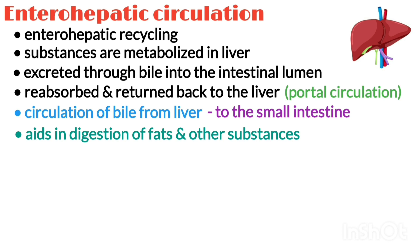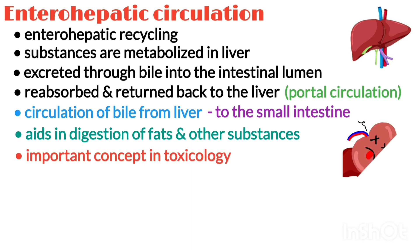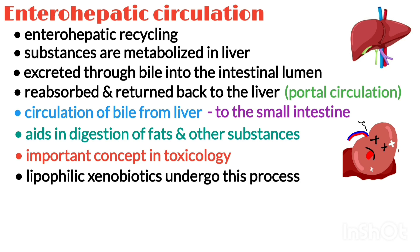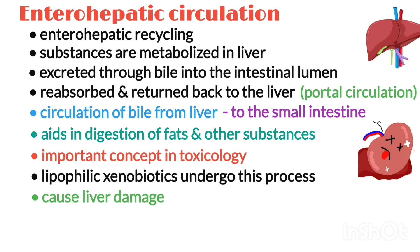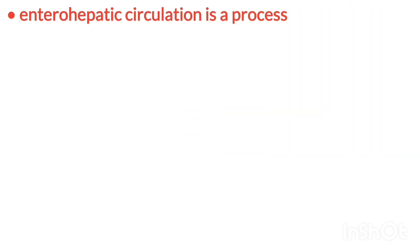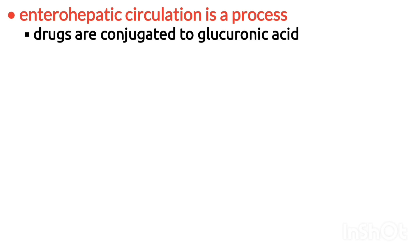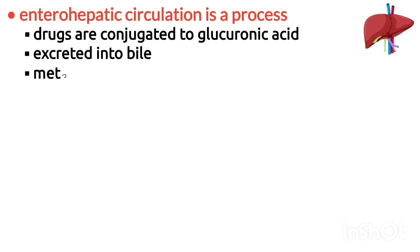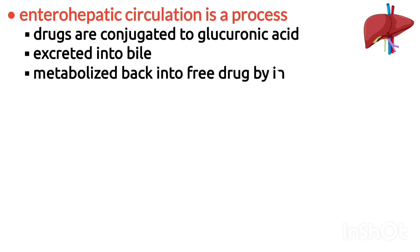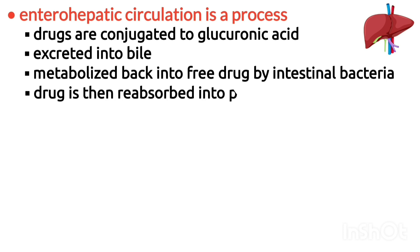Enterohepatic circulation is an especially important concept in the field of toxicology, as many lipophilic xenobiotics undergo this process causing repeated liver damage. Enterohepatic circulation of drugs describes the process by which drugs are conjugated to glucuronic acid in the liver, excreted into bile, metabolized back into the free drug by intestinal bacteria, and the drug is then reabsorbed into plasma.